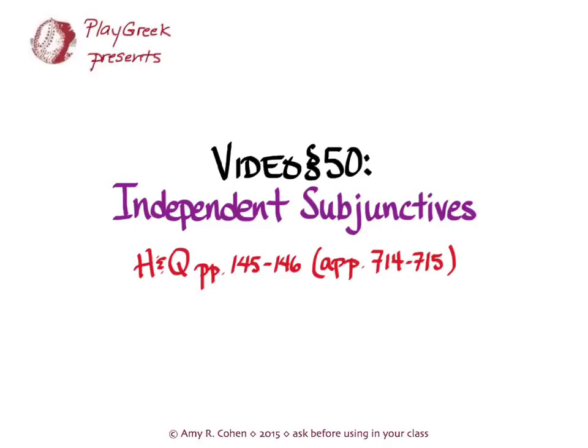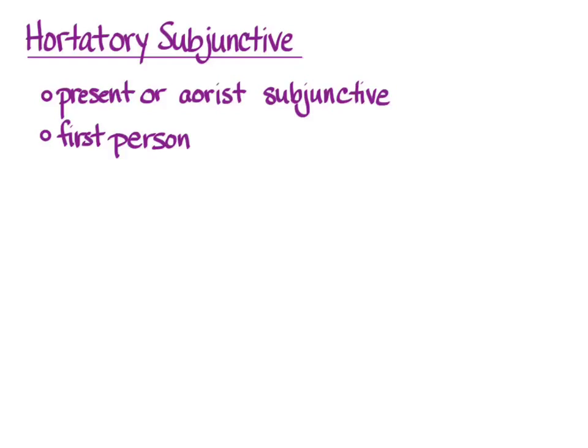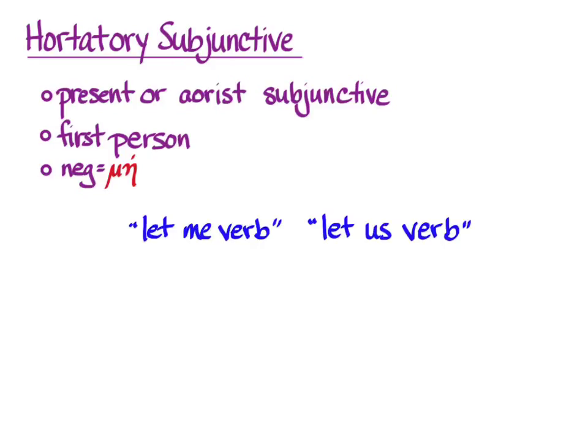We're going to look at three kinds of independent subjunctive sentences in this video. The first is called the hortatory subjunctive, which Greek uses to exhort some action. It can use the present or aorist subjunctive and is in the first person. The negative is mē.